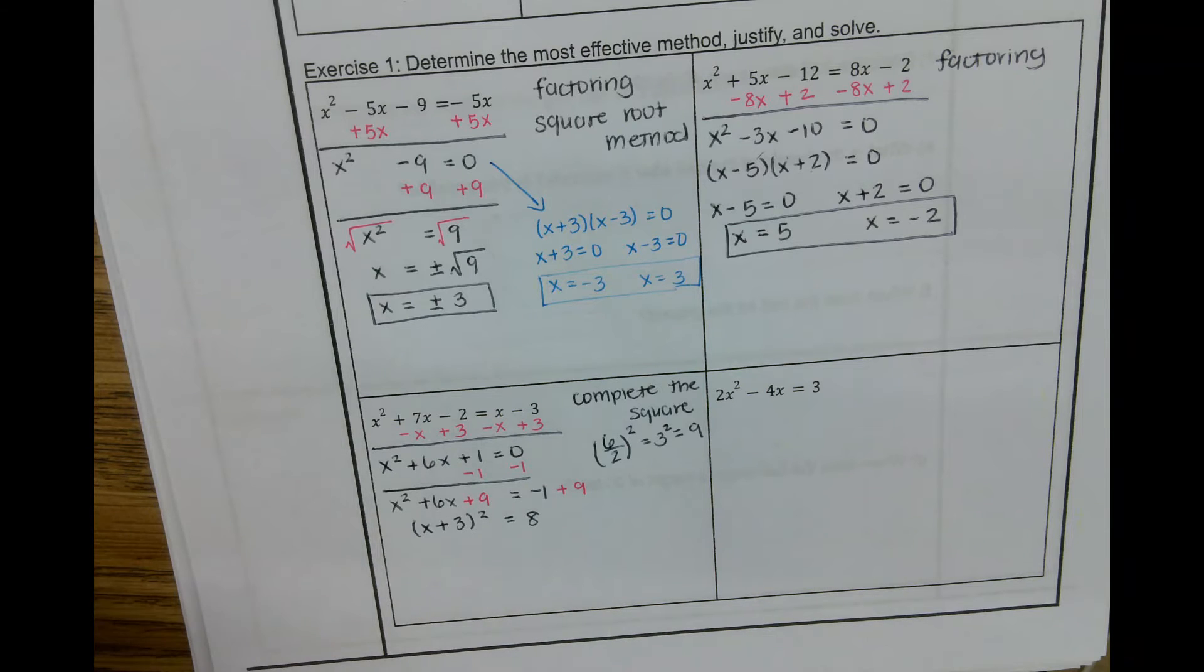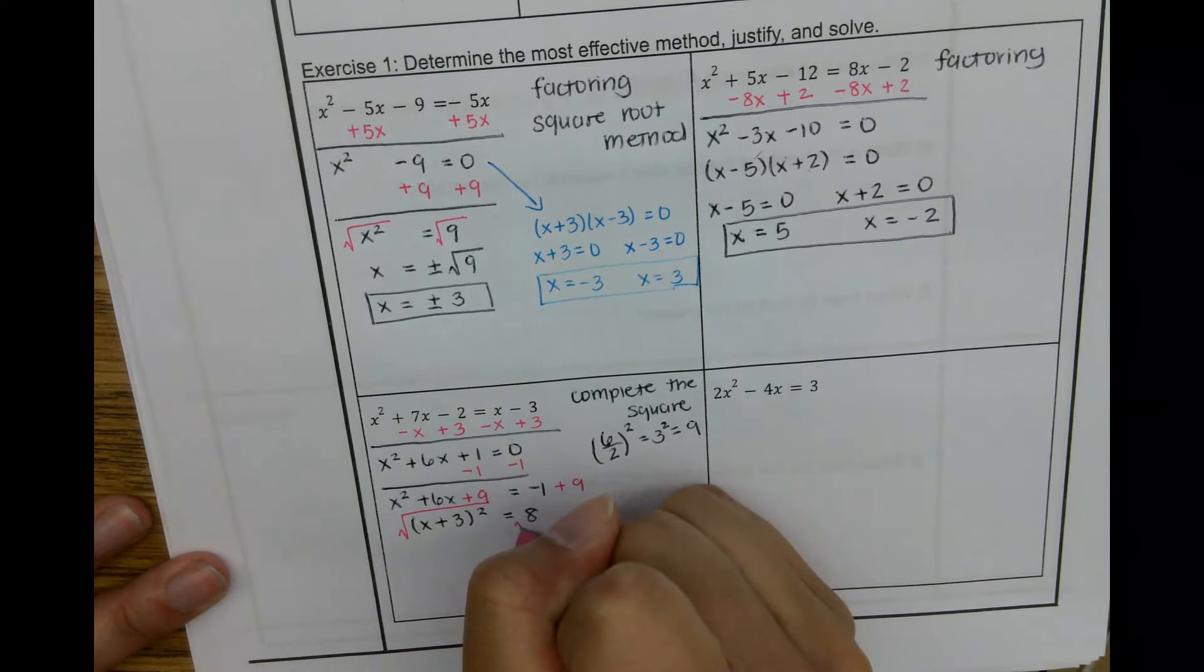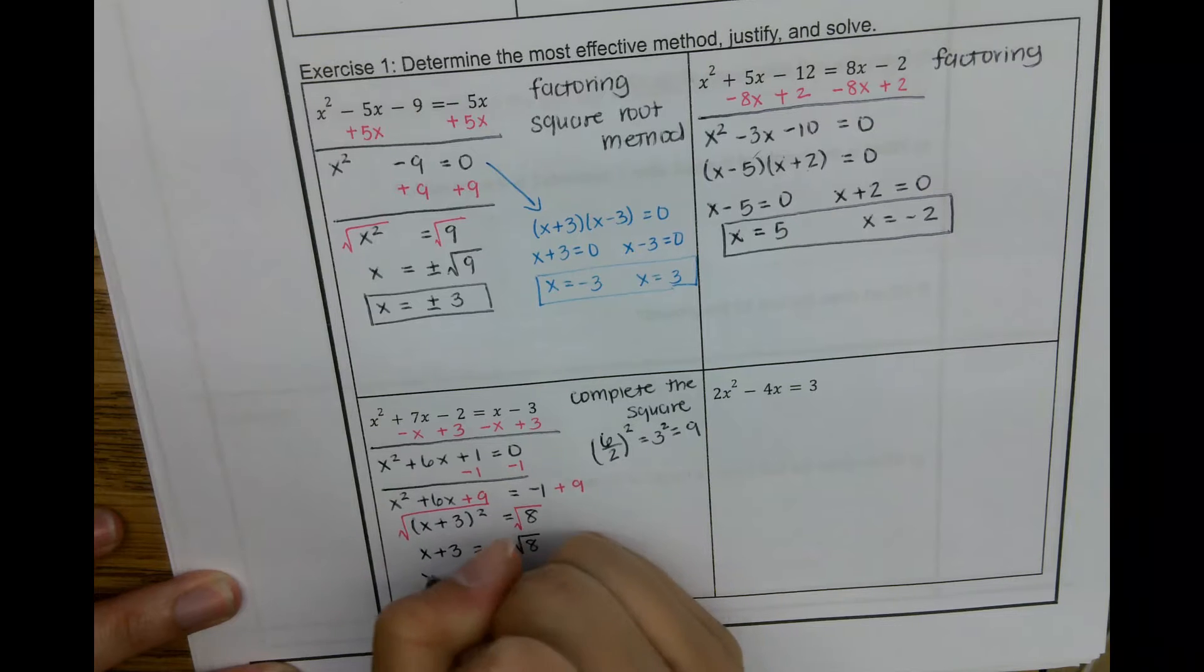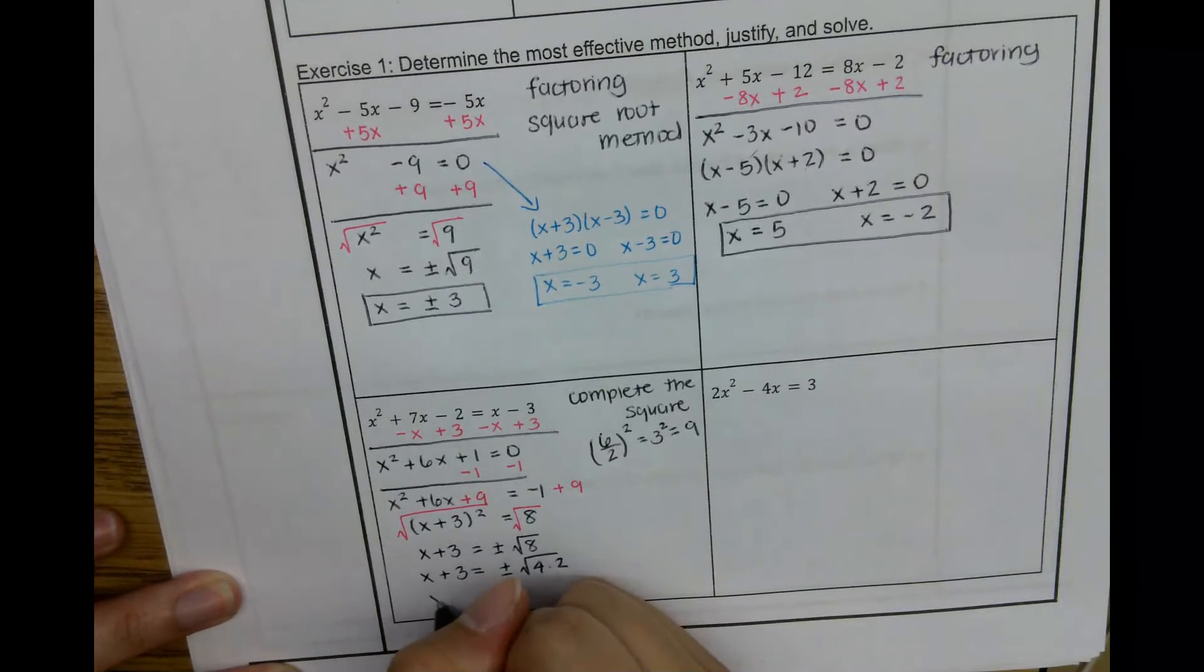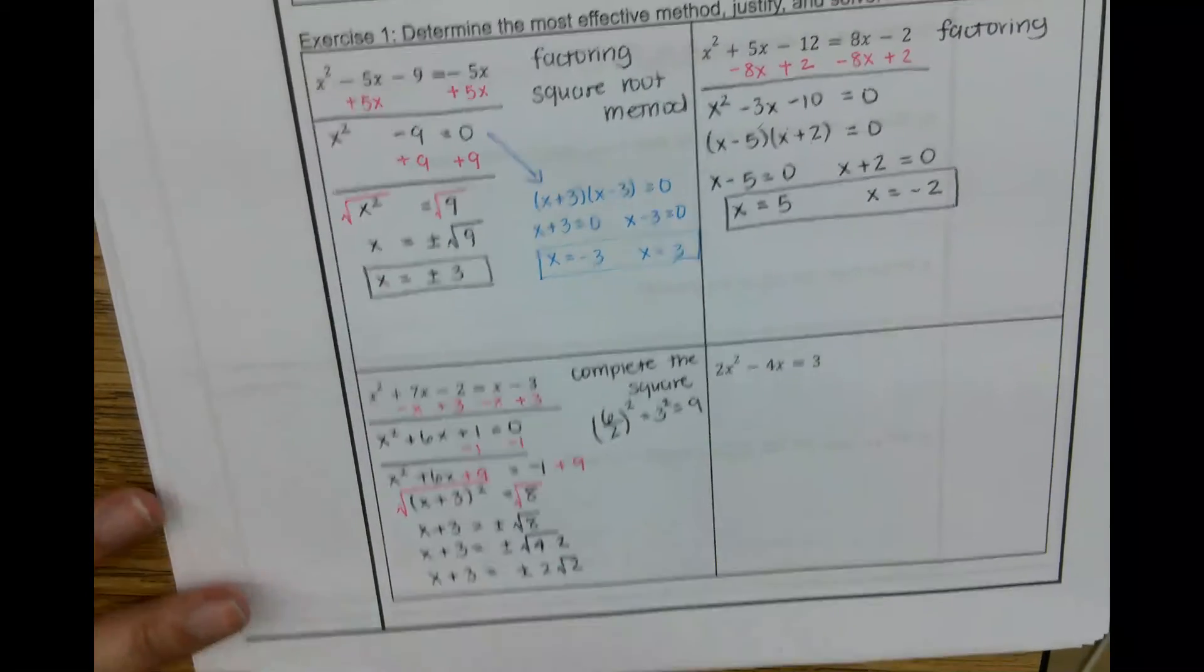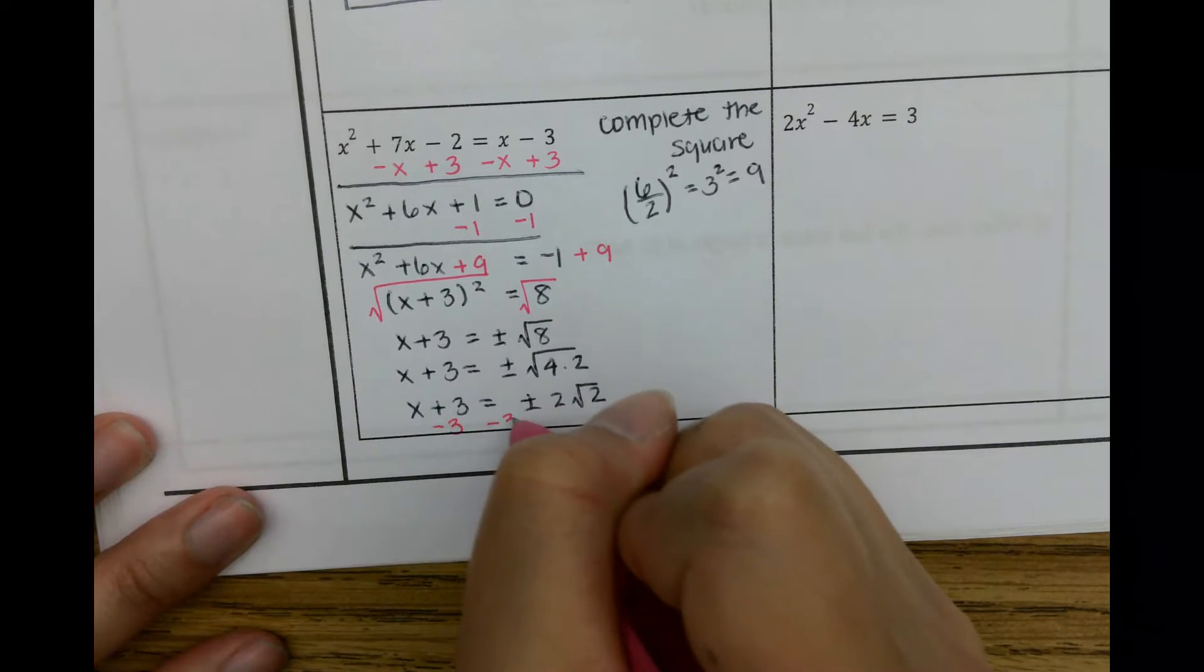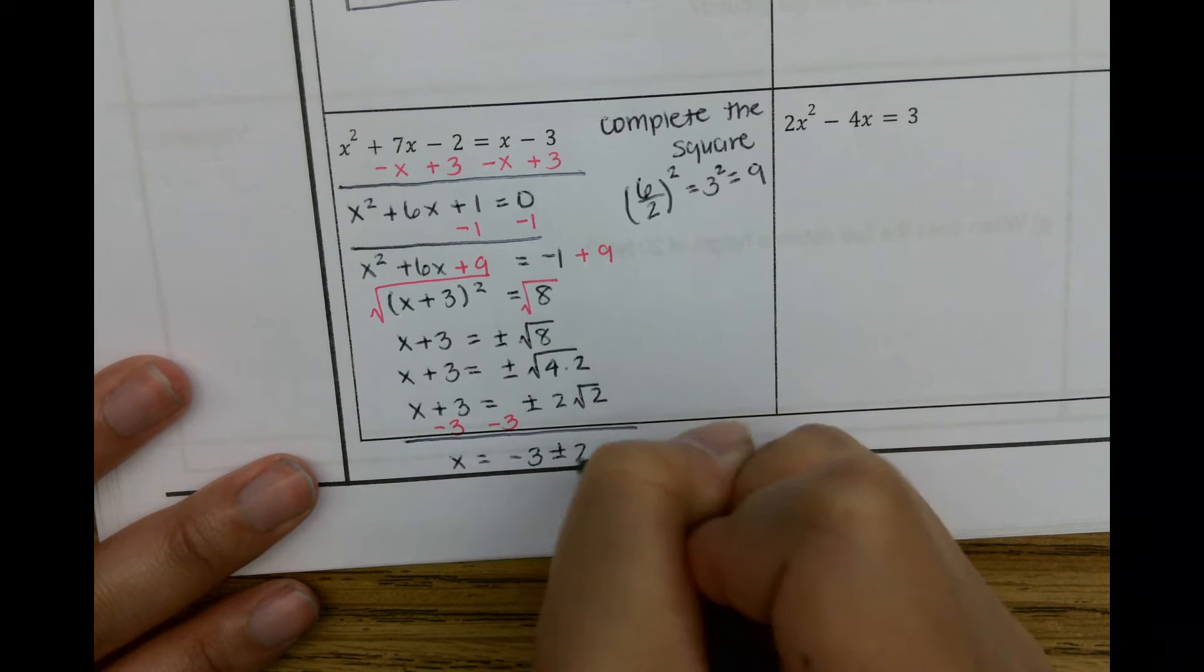Then what I'm going to do is square root both sides. This becomes x plus 3. This is plus or minus square root of 8. I know that square root of 8 has a perfect square in it. It's 4 times 2. That perfect square is 4. Which means this is 2 square root of 2. Square root of 4 becomes that 2 on the outside. And then, now all I have to do is move this minus 3 over. So I have x equals negative 3 plus or minus 2 square root of 2.